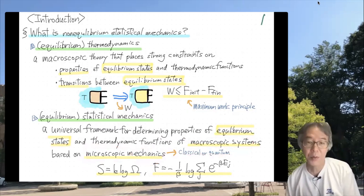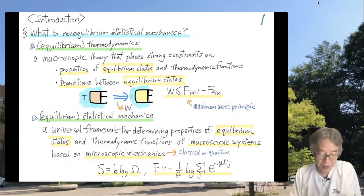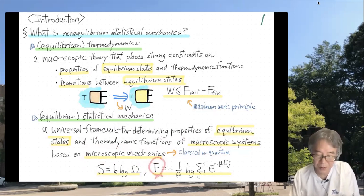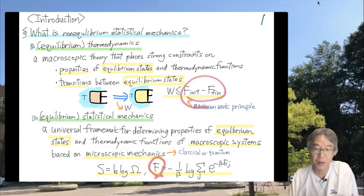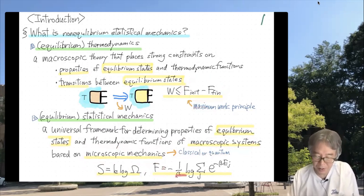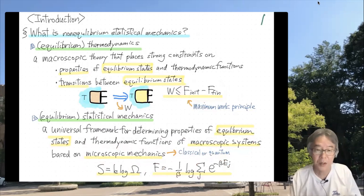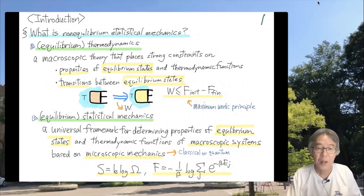For example, you can express the entropy as the log of the number of states, or express the Helmholtz free energy via the partition function. Here, E_j is the energy level of this macroscopic system described mechanically.